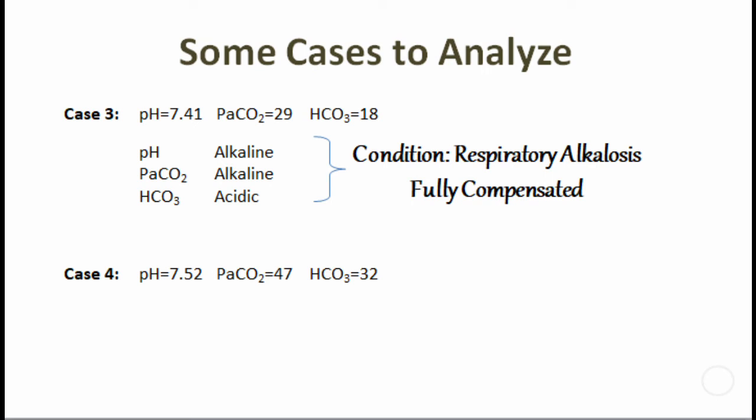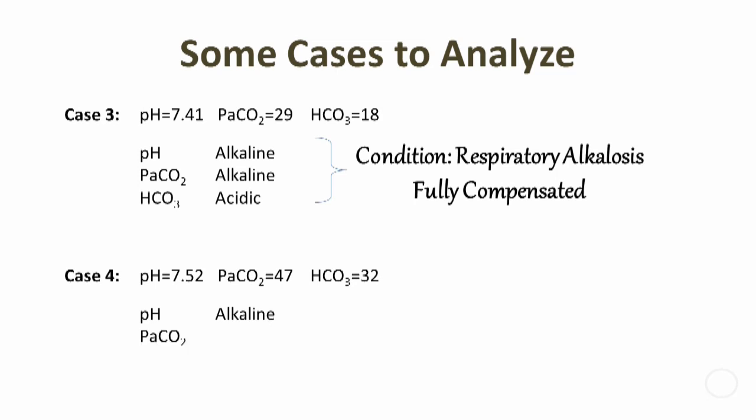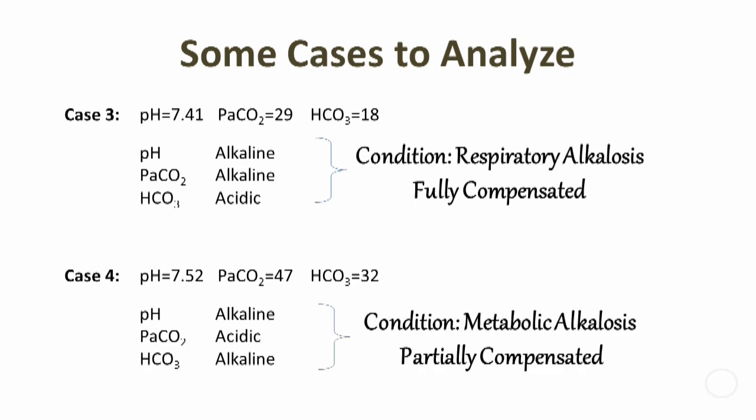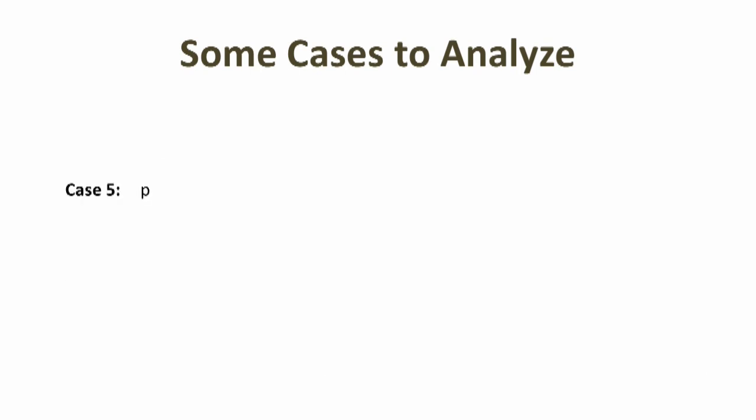Ready? Let's see if you have got it right. pH is alkaline here, PaCO2 is acidic, and HCO3 is alkaline. This condition is diagnosed as metabolic alkalosis, partially compensated. Now the last one, case number five: pH is 7.54, PaCO2 38, HCO3 28.